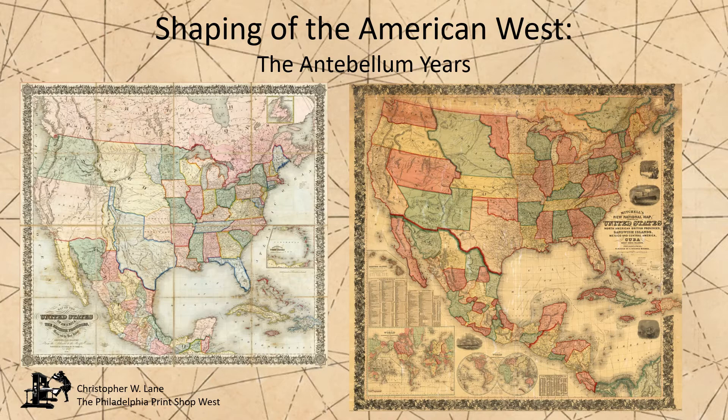Period maps provide a unique perspective on this topic, for they show us the political situation in the country in, as it were, real time, as the borders were drawn and redrawn, even when the borders lasted for just a short time. And as we'll see for the first time in this lecture, contemporary maps sometimes also show borders that were never officially created. These lectures will look at the shaping of the American West using original maps from the period to help illustrate this complex subject.